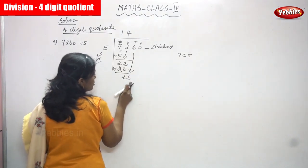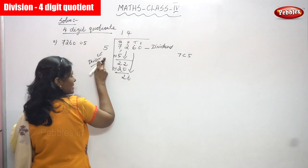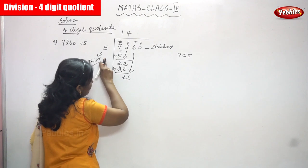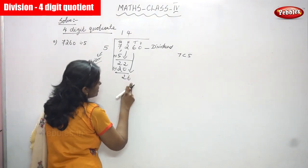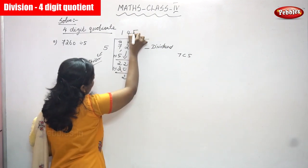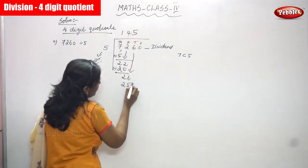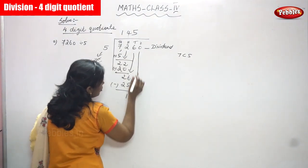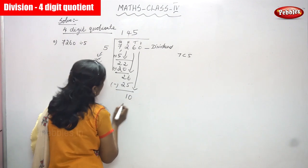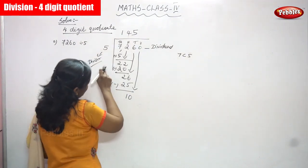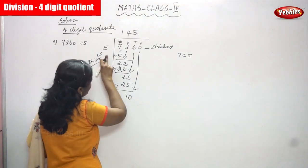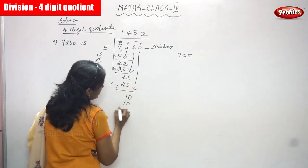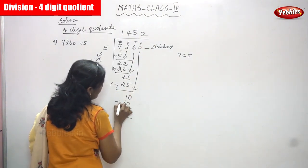The number becomes 26. Twenty-six is greater than five, so how many times does five go into 26? Five fives are 25. Write 5 here and subtract: 26 minus 25 gives one. Bring down the one's place digit, which is zero. One and zero makes 10. Ten is greater than five, so how many times does five go into 10? Two fives are 10. Ten minus ten gives zero.